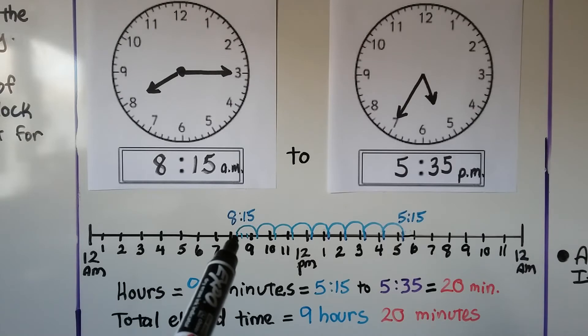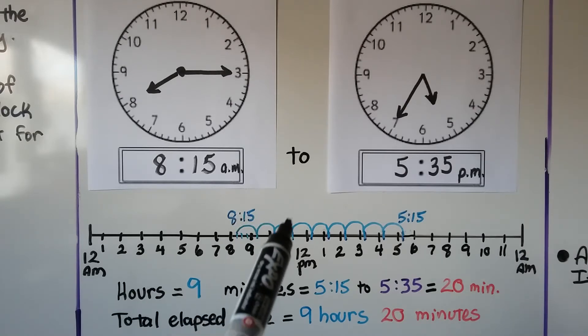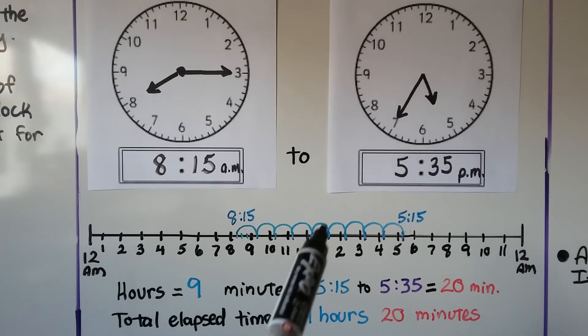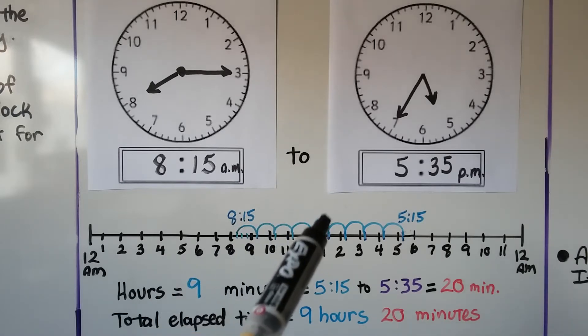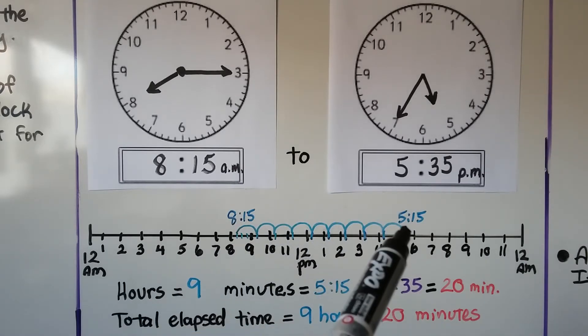If she started at 8:15 we can count 9:15, 10:15, 11:15, 12:15, 1:15, 2:15, 3:15, 4:15, 5:15. That would be 1, 2, 3, 4, 5, 6, 7, 8, 9 hours to 5:15 p.m.